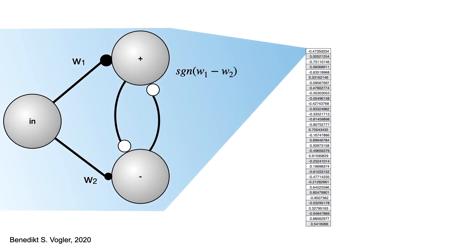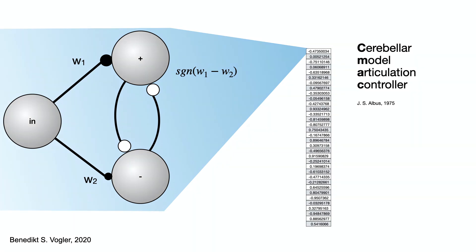We can do this reduction for each input cell. This simplified model was first described in 1975 by J.S. Albus as a Cerebellar Model Articulation Controller, or short CMAC.